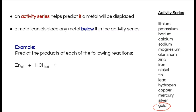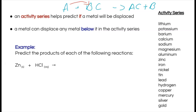Gold is the least dominant element on the activity series, which means it can't bump out anything. So in the general formula A plus BC going to AC plus B, A can only bump out B if A is higher on the activity series list — if it has dominance over B.